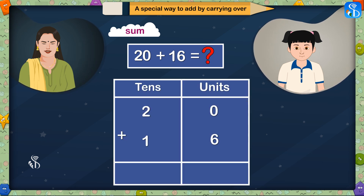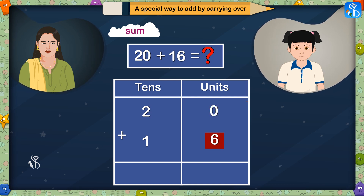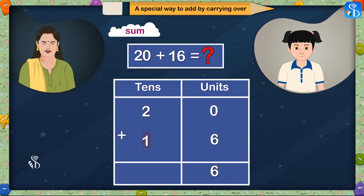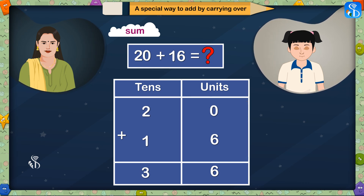We will have to add the units first. If we add 6 units to 0 units, the answer will be 6 units only. And if we add 1 tenth to 2 tenths, the sum will be 3 tenths. This means that 20 plus 16 is equal to 36.